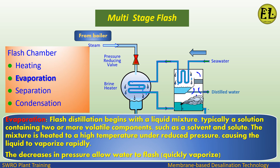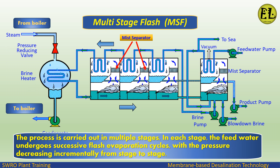Flash distillation begins with a liquid mixture, typically a solution containing two or more volatile components such as a solvent and solute. The mixture is heated to a high temperature under reduced pressure, causing the liquid to vaporize rapidly. The decrease in pressure allows water to flash, or quickly vaporize.